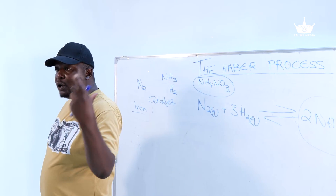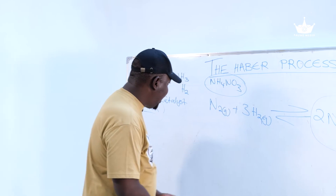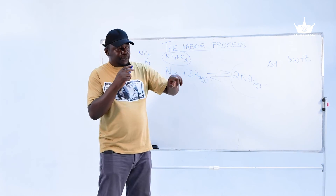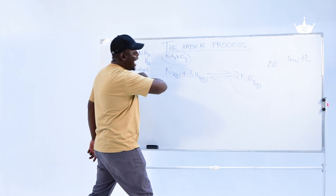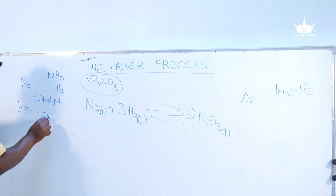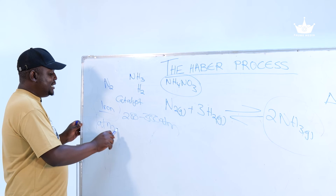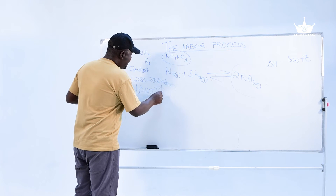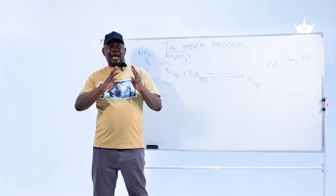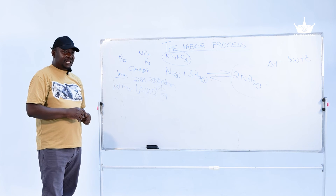Another important condition is pressure. You need very high pressure to get a high yield of ammonia. Checking the equation, you have four moles of reactants producing two moles of product. So according to Le Chatelier's principle, if we increase the pressure, we get a high yield in the forward reaction. The pressure conducive for this is 200 to 300 atm, where one atm is equivalent to 1.01 × 10⁵ pascals approximately. That is a very huge amount of pressure.